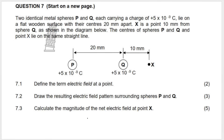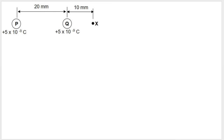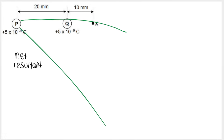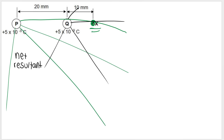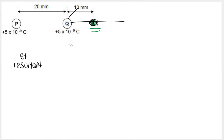The next question says calculate the net electric field at point X. Net means resultant, which means overall. At point X there will be an electric field due to Q and an electric field due to P. Imagine Q is not there — P's field lines extend out in 3D space and there's an electric field felt at X because of P. Same thing for Q: Q's electric field lines extend outwards and there's an electric field felt at X because of Q. So we need to work out the electric field due to P and the electric field due to Q, and add them together.